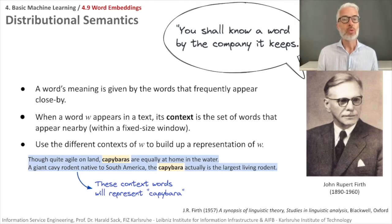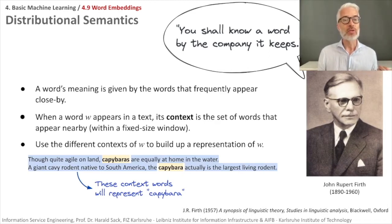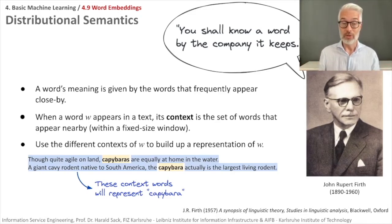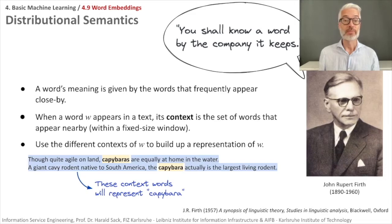There is a nice example about capybaras: 'Though quite agile on land, capybaras are equally at home in the water,' and also 'a giant cavy rodent native to South America, the capybara is actually the largest living rodent.' The blue parts shown here are the context words which define or determine the meaning of capybara. We know this already from our initial distributional semantics slide in the natural language processing part.